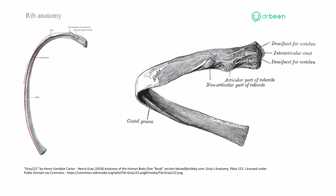This is another diagram of the rib. Here is the rib's head and this is the tubercle. It slants downwards and forwards.